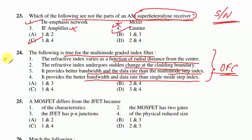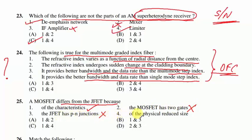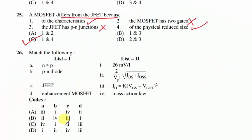Question 25: MOSFET differs from JFET because — MOSFET does not have two gates (JFETs have two gates); the JFET has PN junctions. Physical size depends on technology used. Corresponding option C is correct.